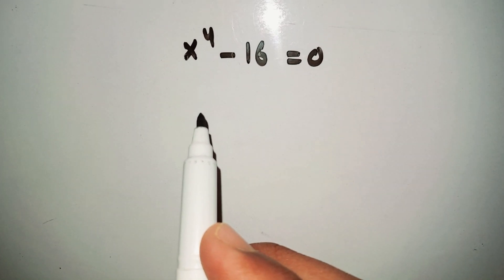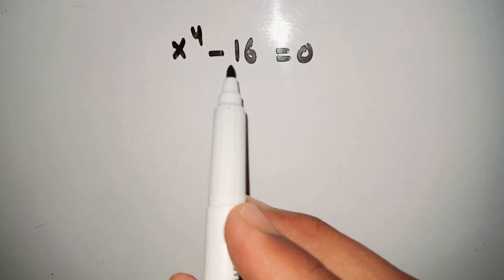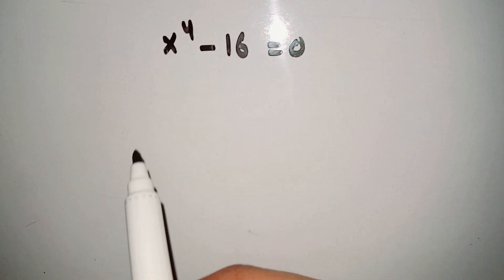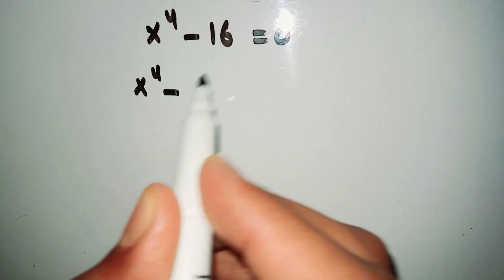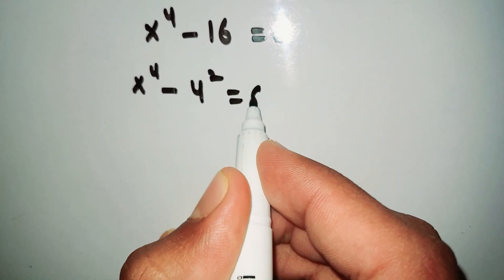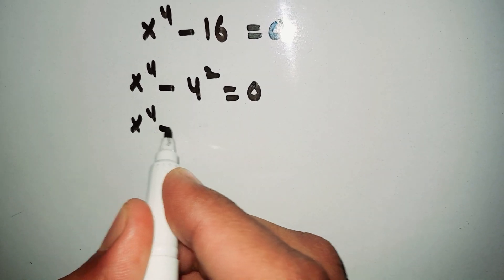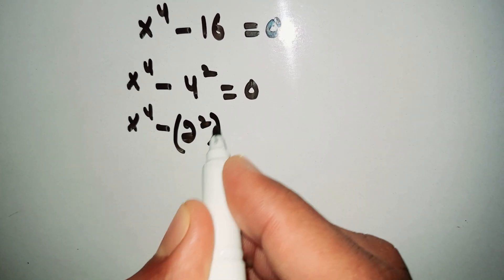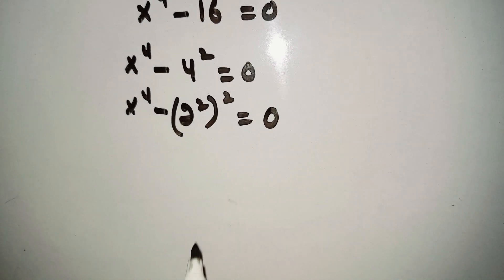Welcome back to another video. In this video we are going to solve the problem x⁴ - 16 = 0, and we have to find all solutions of x. First, we rewrite 16 as 4², and then 4² as (2²)², so x⁴ - (2²)² = 0.